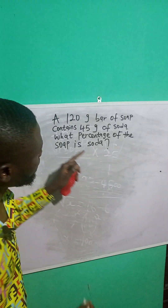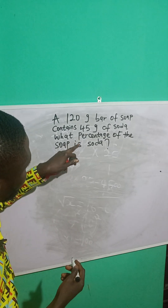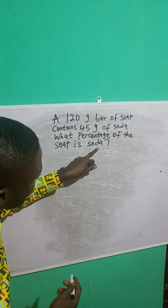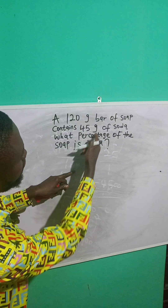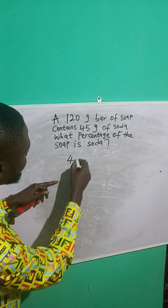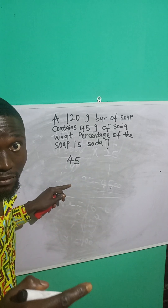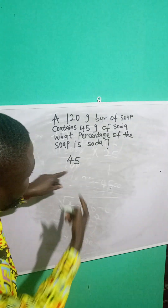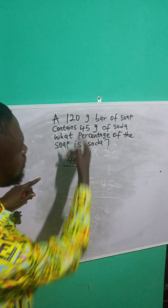So to solve this, you check for what it says — what percentage of the soap is soda. So the soda is 45 grams. So it will now be this 45. Let's get the fraction of the soda. So it's 45 over 120.